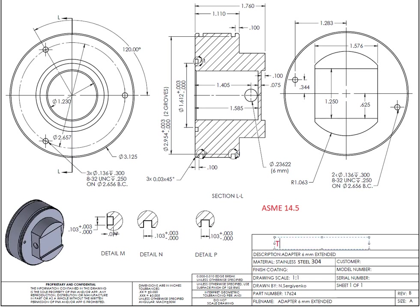You can also see the title block — it's the name of the company. If it's a big company it's just the name; if it's a small company it will provide name, address, and phone number. Then there's the name of the part, and very important: what kind of material we use to machine those parts. If you're interested in materials you can reference the Machinery's Handbook. This part doesn't require any finish coating. The drawing scale is one to one, so the drawing and the actual part are the same size.